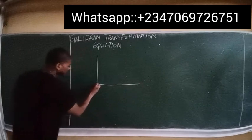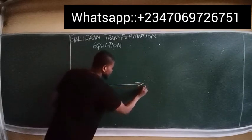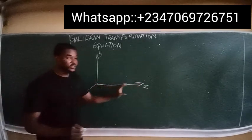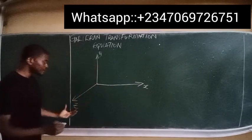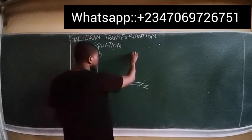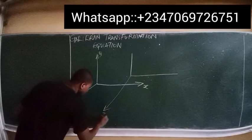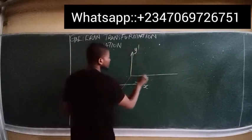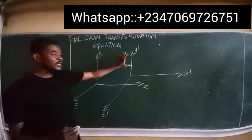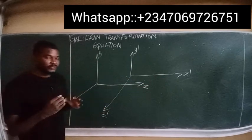The first reference frame has axes labeled x, y, and z, where x is displacement in the x-direction, y is distance in the y-axis, and z is distance in the z-direction. We always have two reference frames, so the second reference frame has corresponding primed axes: x prime, y prime, and z prime.